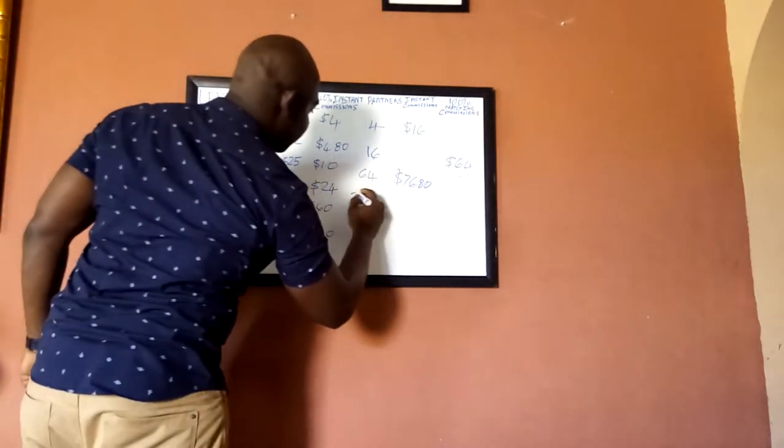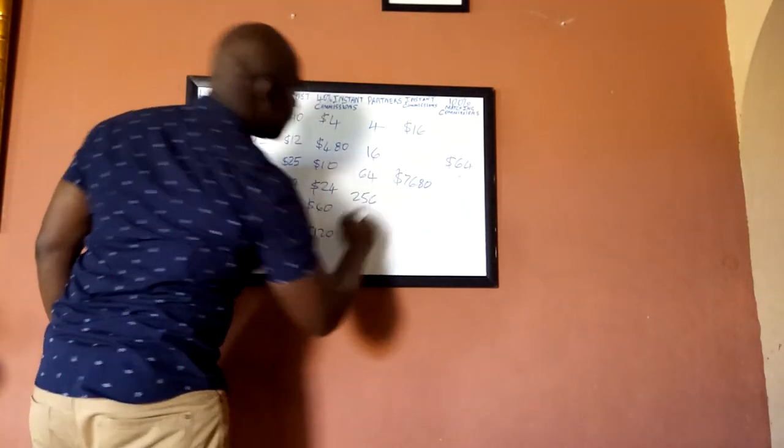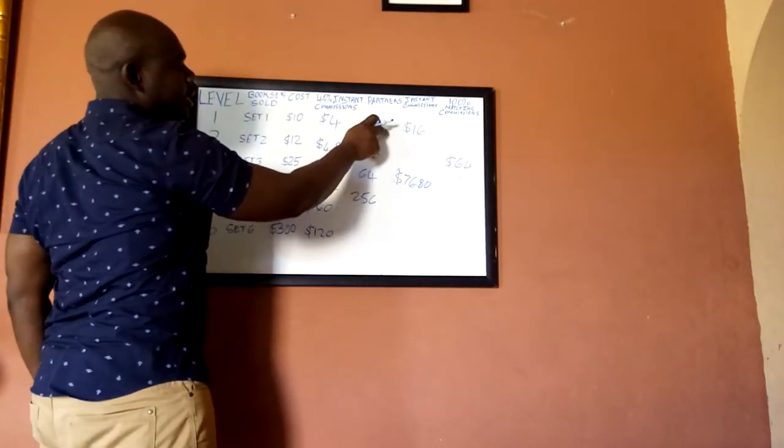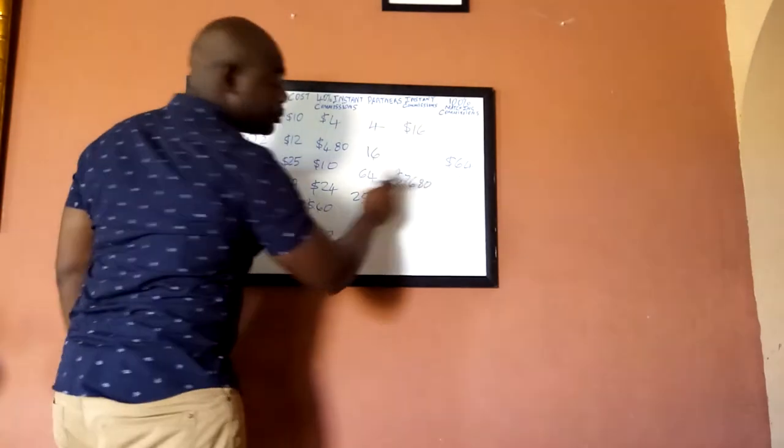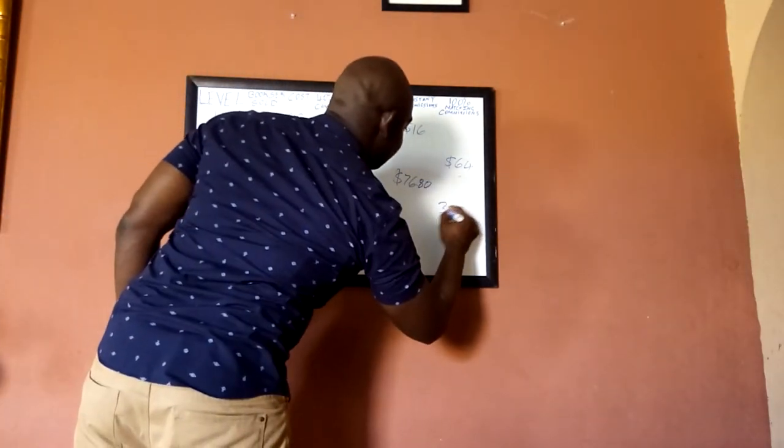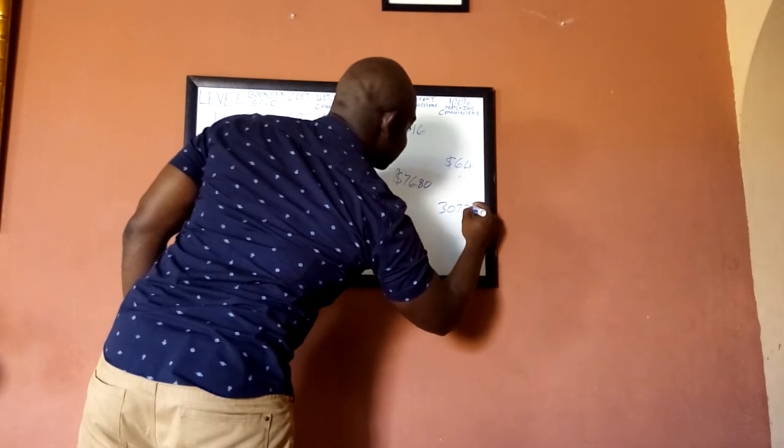Now when they partner with their four, now it brings 256. So when they earn enough to buy the second book, your people will collect $76.80, so you get a 100% matching commission of $307.20.